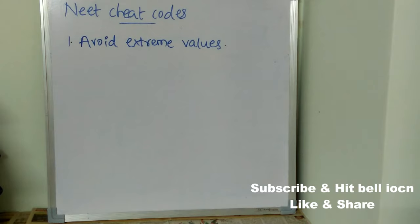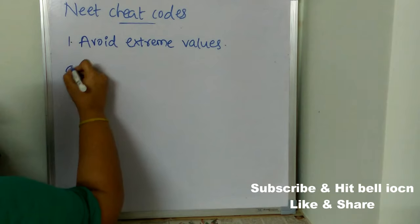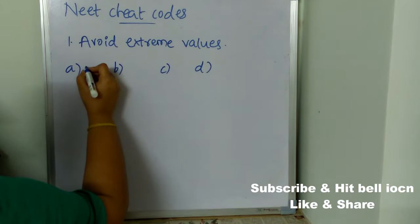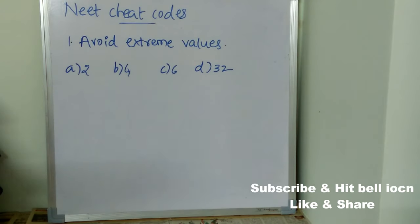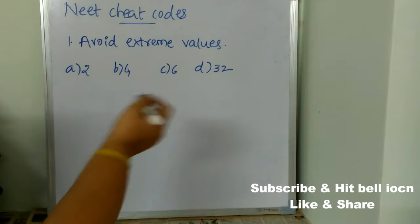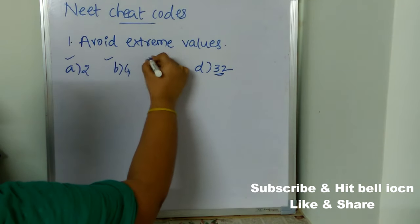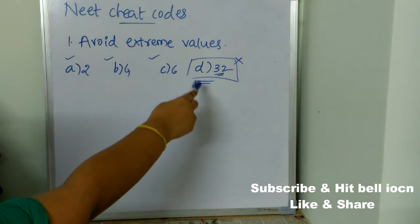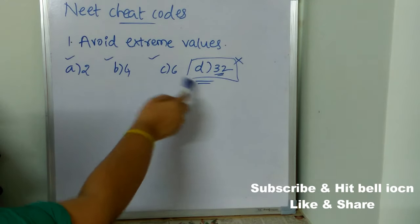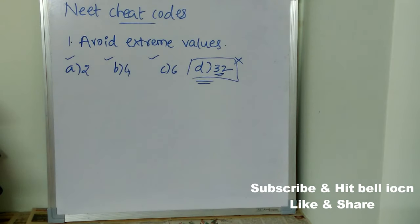The first cheat code is: avoid extreme values. For example, if a question has four options — 2, 4, 6, and 32 — most students might think 32 is different from the other three and choose it. This is wrong. Whatever value is very different from the rest, you need to avoid it — it cannot be the correct answer. Out of the remaining three options, choose one. Avoid the option that is extremely different from the others.